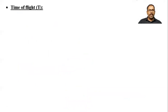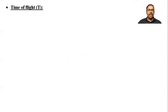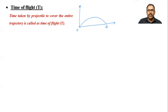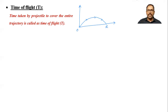Now we move forward to the next topic: time of flight, represented by capital T. Time of flight means the time taken by the projectile to cover the entire projectile path. So it is the time taken by the projectile to go from point O to point R along the trajectory.